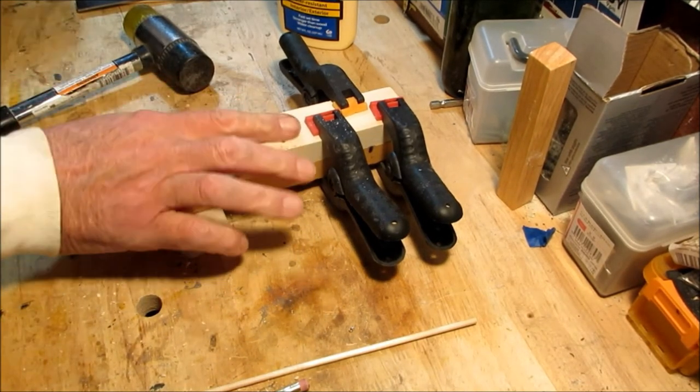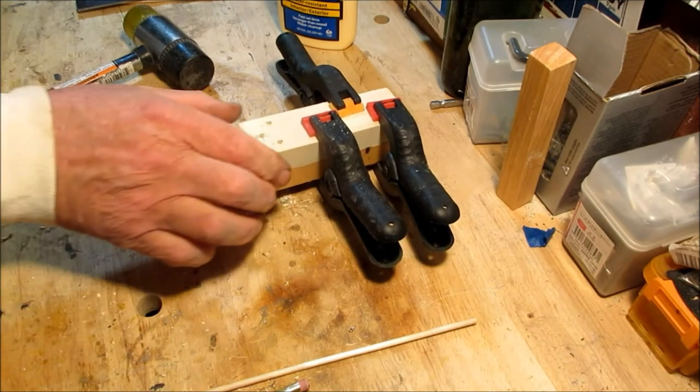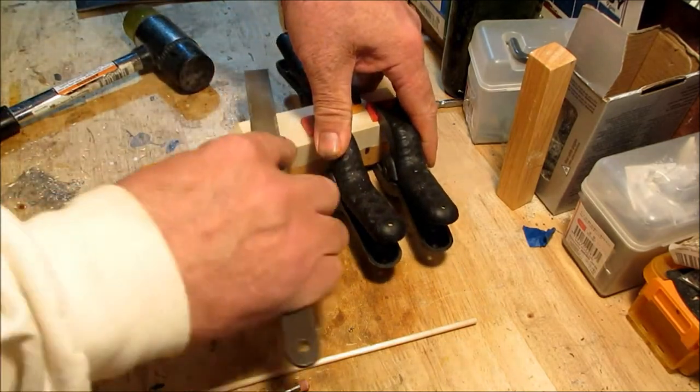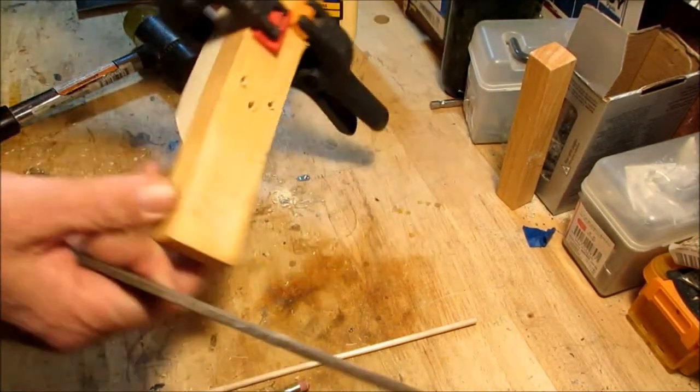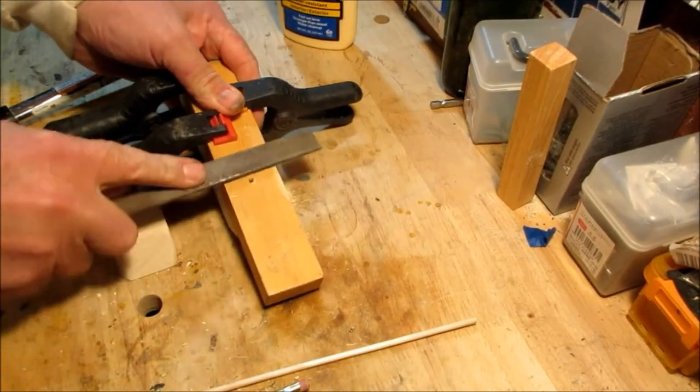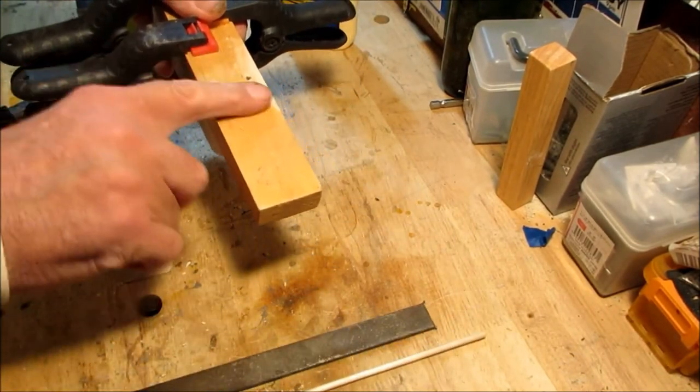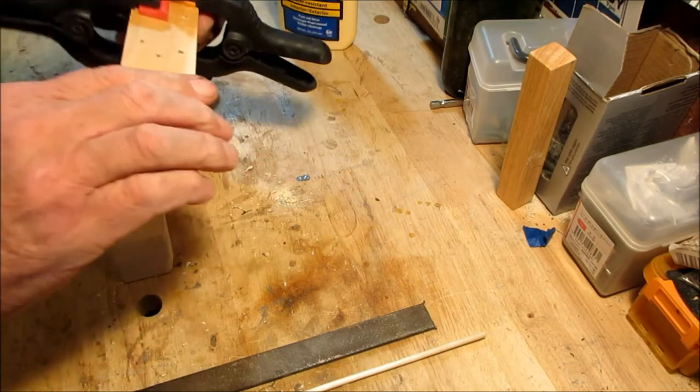Now what I would do before I get going too far here is take some kind of file, run to the belt sander, make sure those are fairly smooth. But they go through all the way. Nothing we need to be real picky about because the dowels are going to come through and have to be cut off and sanded later.